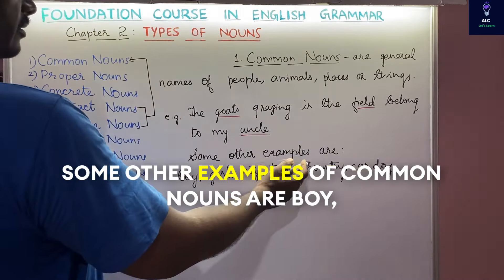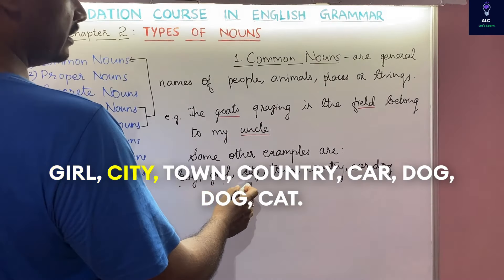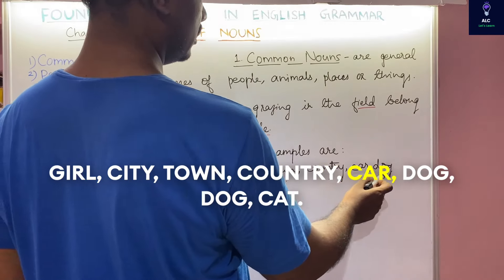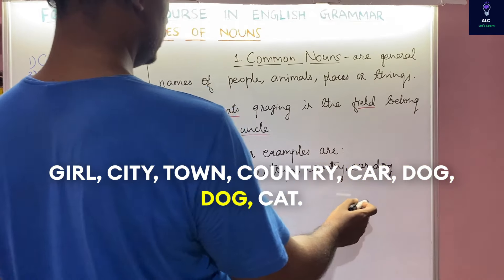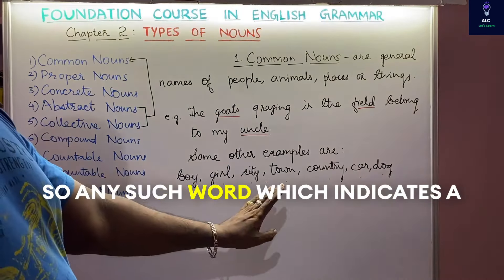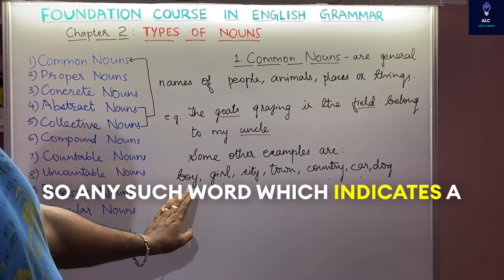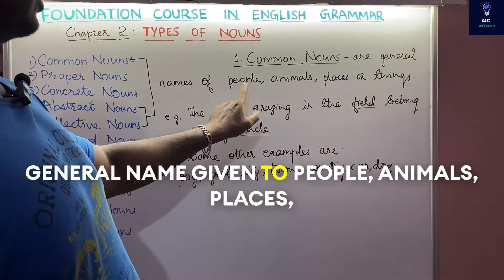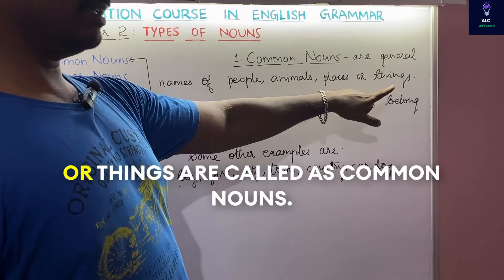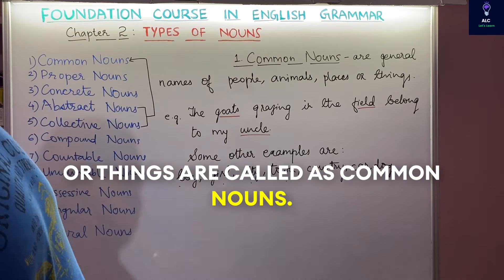Some other examples of common nouns are boy, girl, city, town, country, car, dog, cat. Any word which indicates the general name given to people, animals, places, or things is called a common noun.